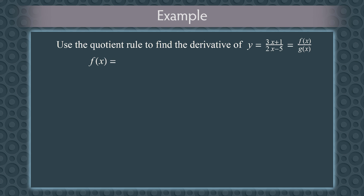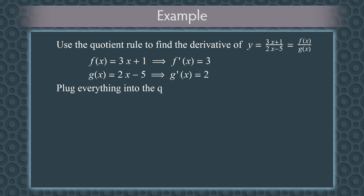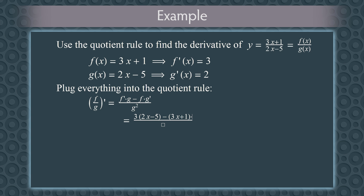Since f of x equals 3x plus 1, the derivative of f is 3. And because g of x equals 2x minus 5, g prime equals 2. We can now plug everything into the quotient rule: f prime times g is 3 times (2x minus 5), minus f times g prime which is (3x plus 1) times 2, all over g squared, which is (2x minus 5) squared. Rewriting the numerator in standard form gives us 3 times (2x minus 5) minus 2 times (3x plus 1), all over (2x minus 5) squared.